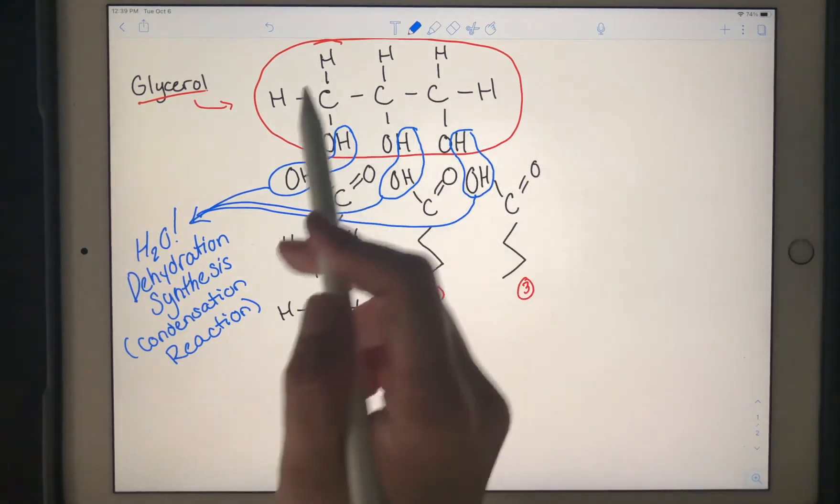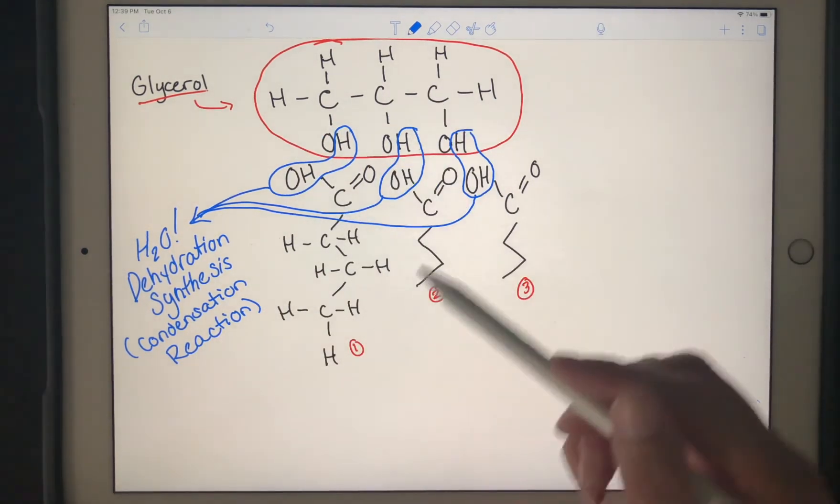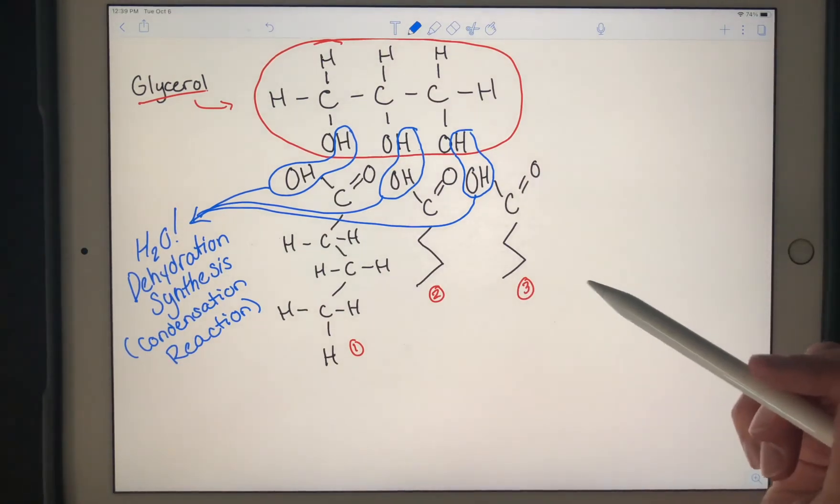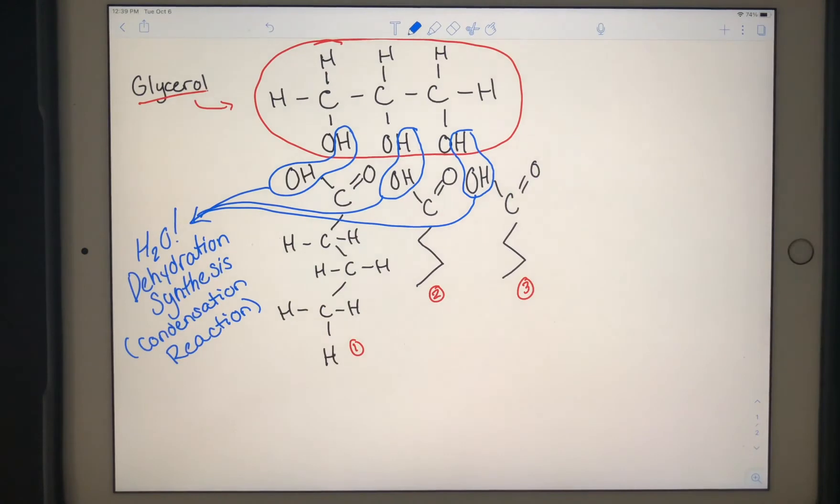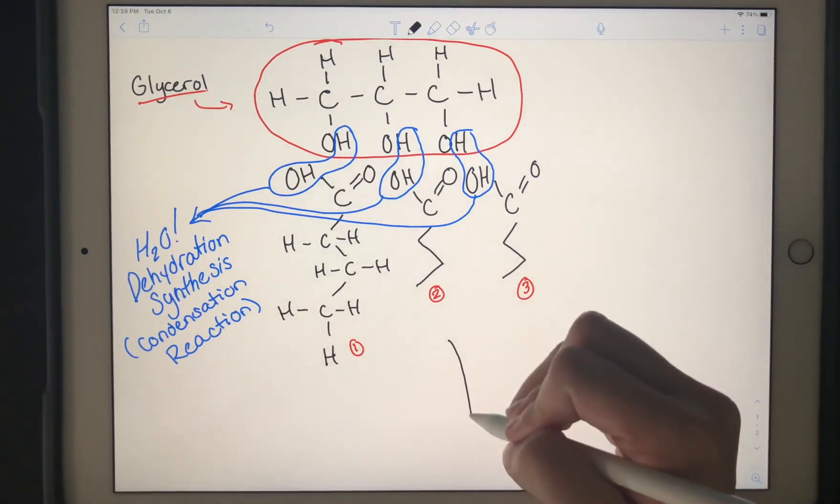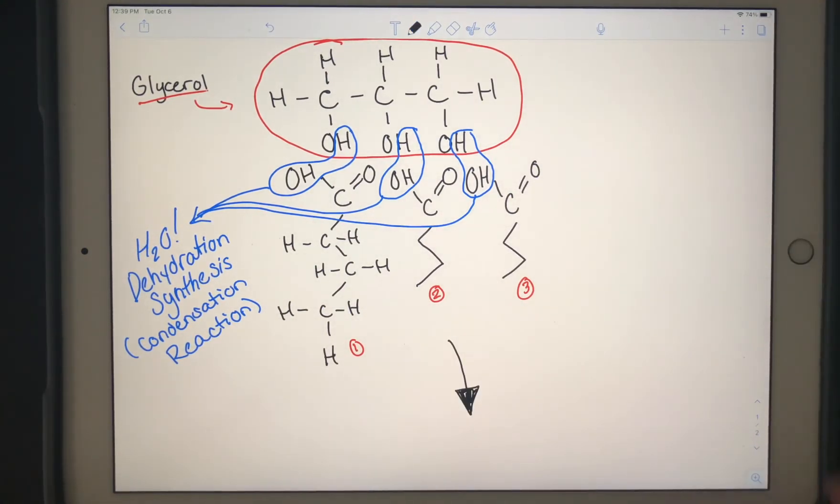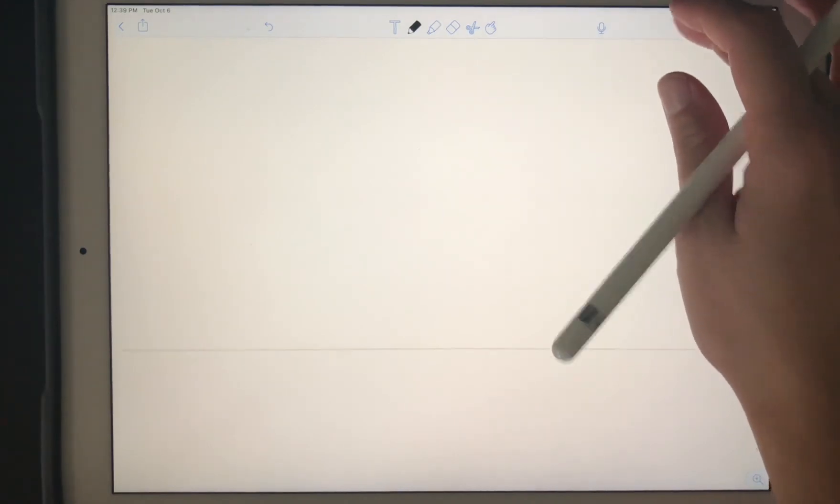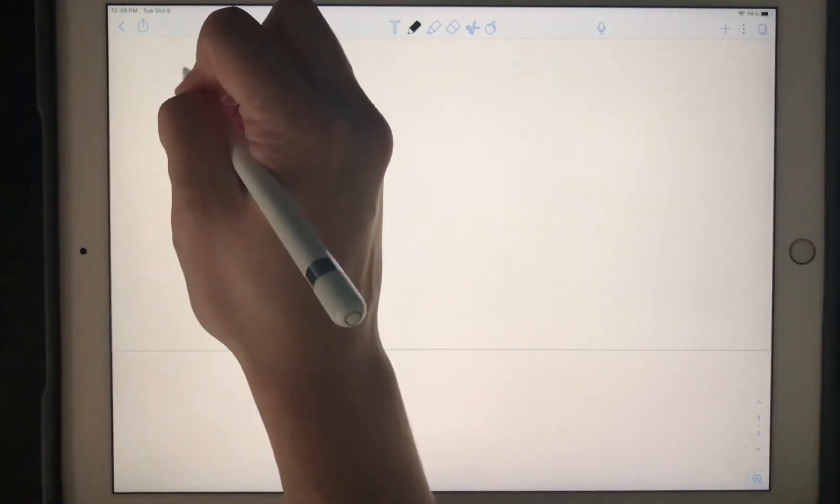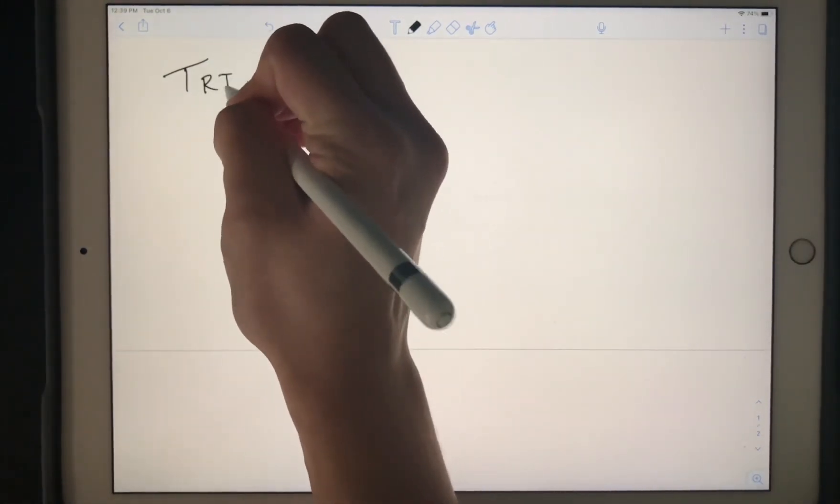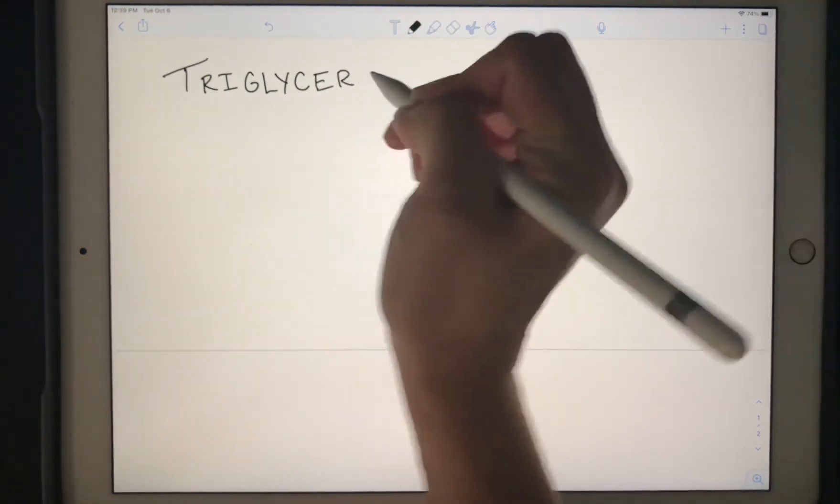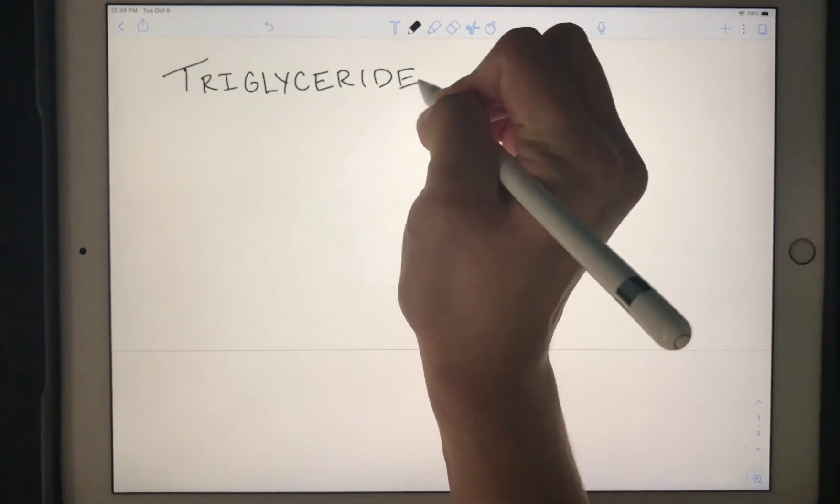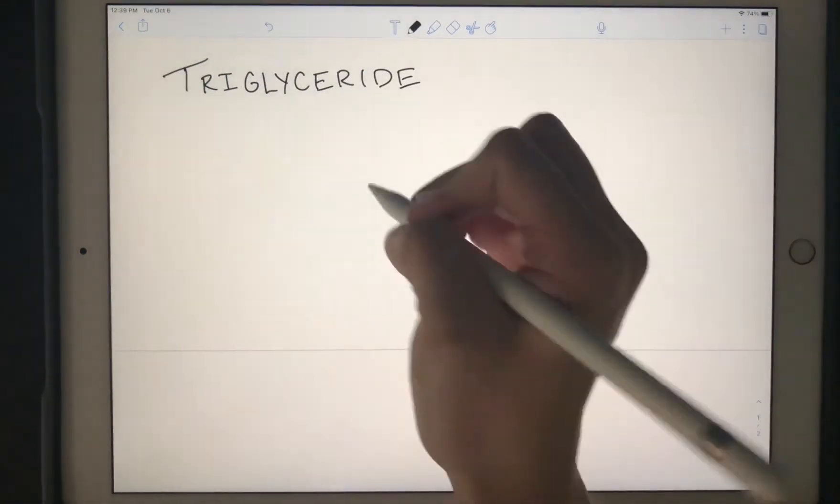So we have our glycerol and three fatty acids, and we just did dehydration synthesis to connect them. So now we're going to draw what it looks like now. So remember, when it's together we call it a triglyceride, because you have those three fatty acid chains and the glycerol.